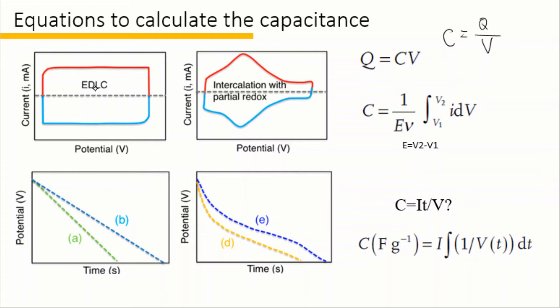For EDLC, because i is constant with V, the capacitance is just i over the scan rate. If i changes with V, then we have to do the integral, integral i dV.